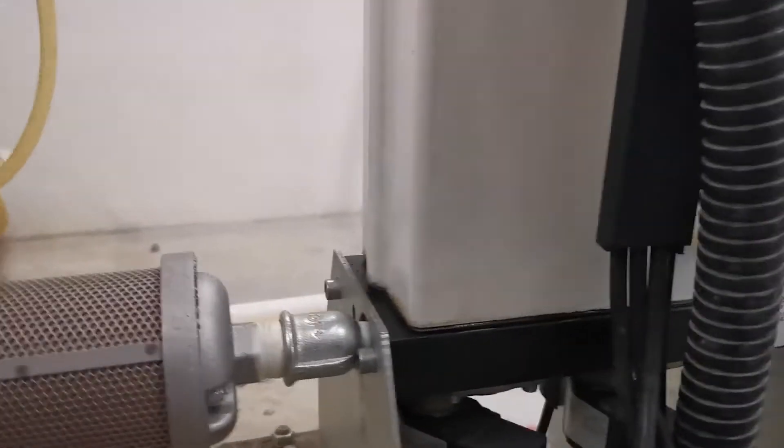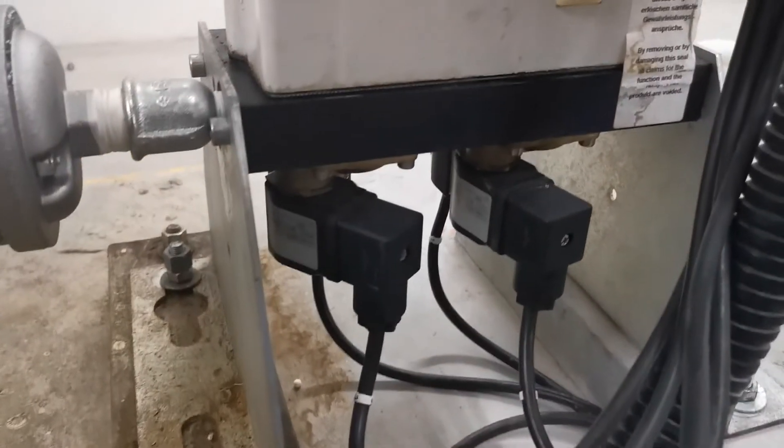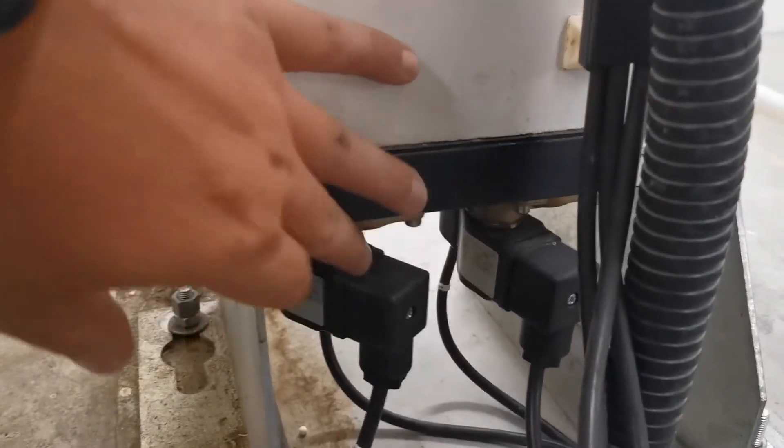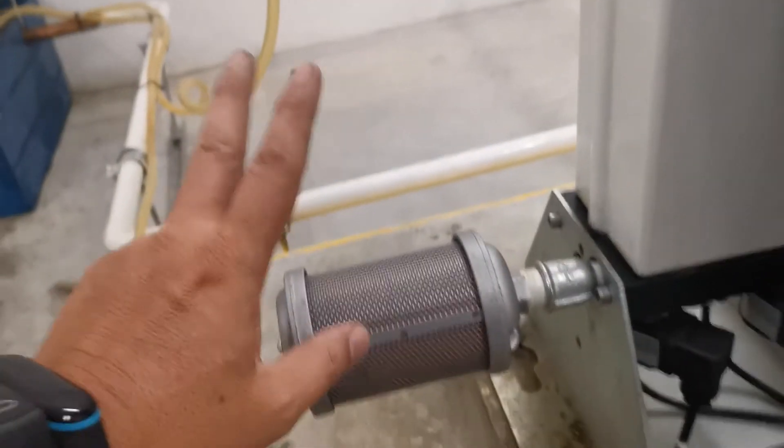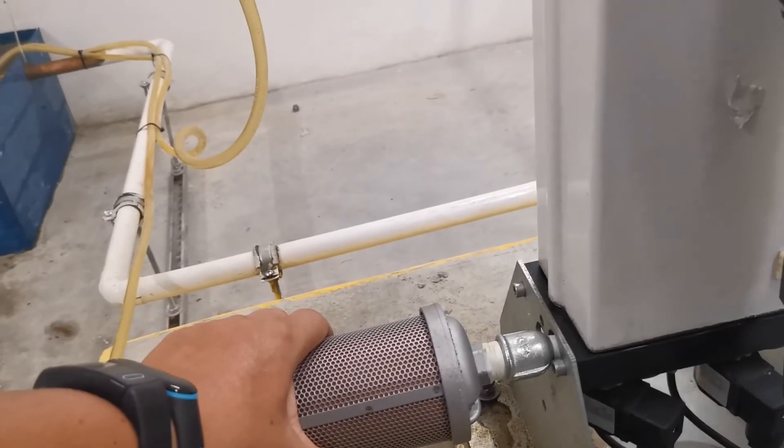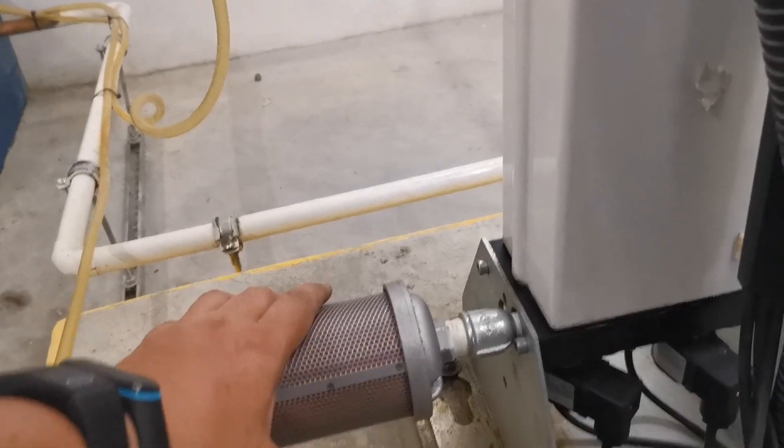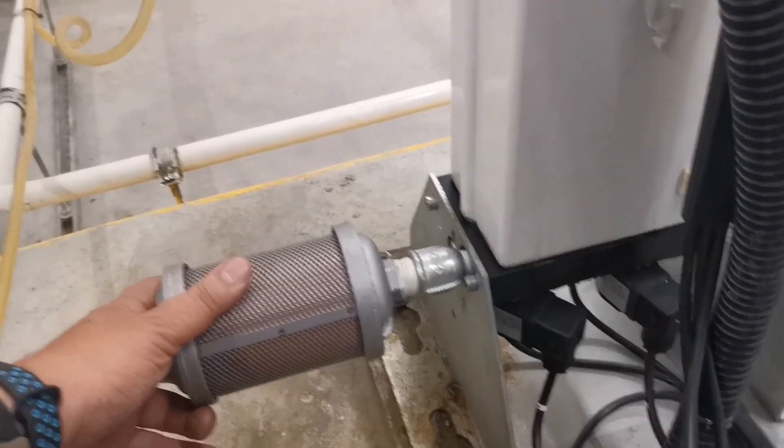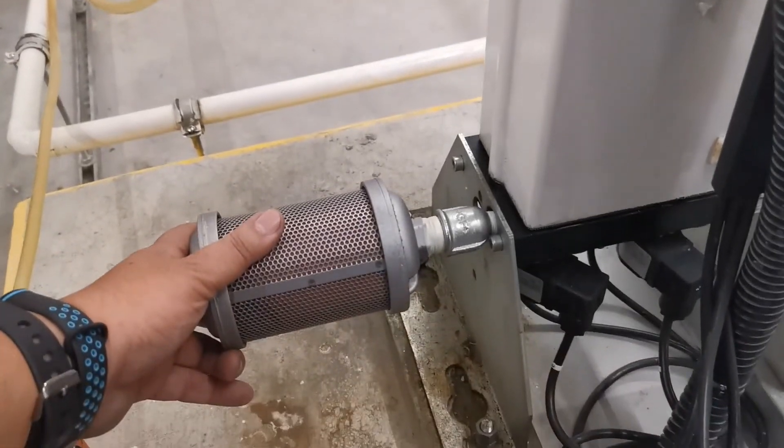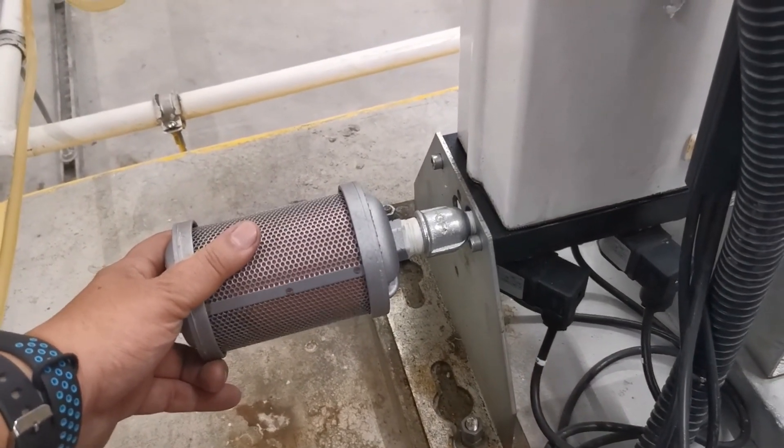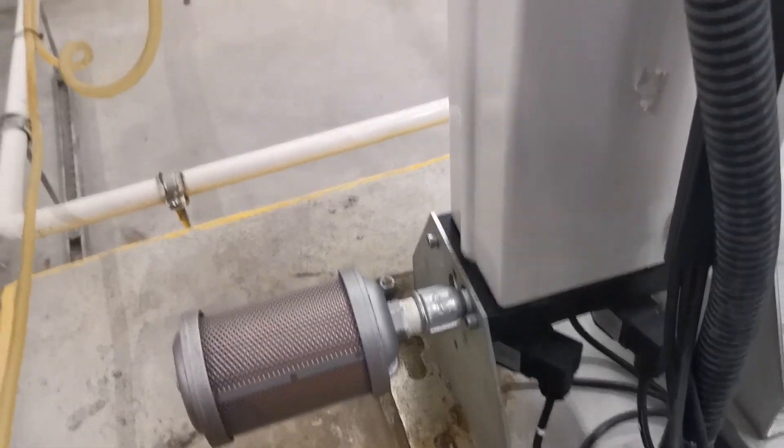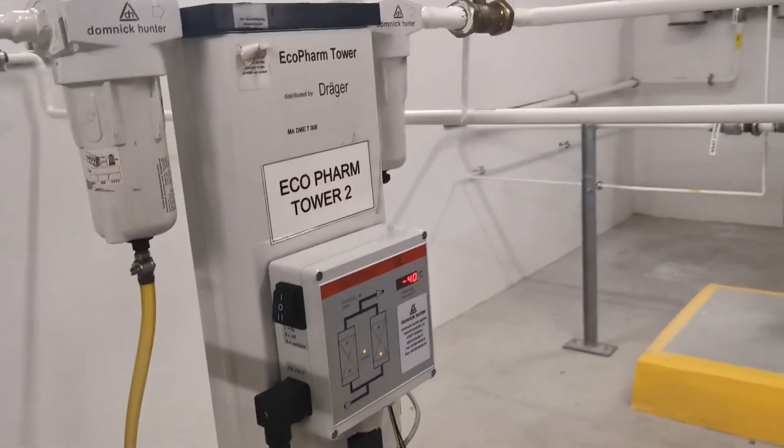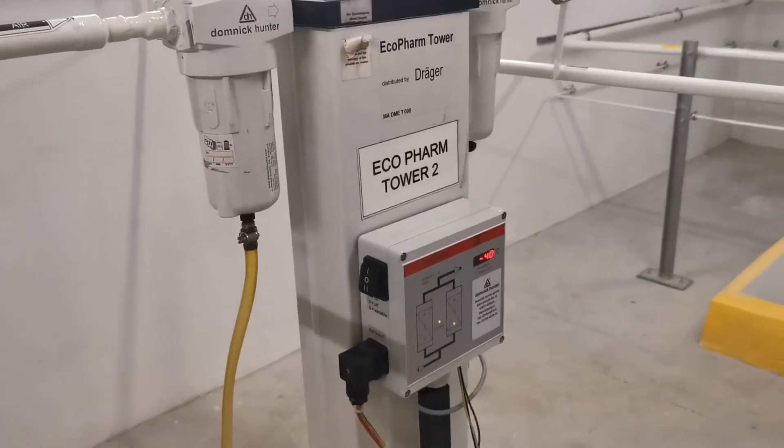Generally, you will have solenoid valves that control the inlet and the exhaust, and of course you have exhaust for all the moisture that was collected. Usually we will put a silencer or sound absorber on the exhaust because when it does go, it can be quite loud. So generally that's how a desiccant dryer works, and thank you for watching.